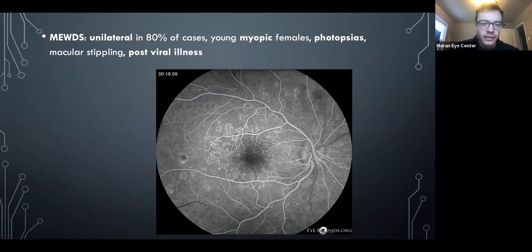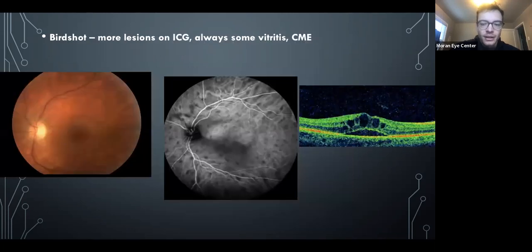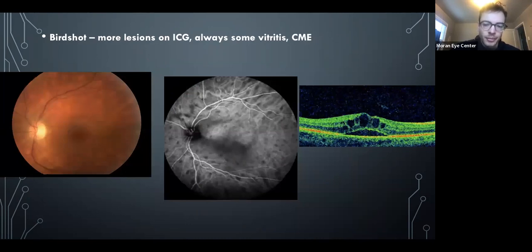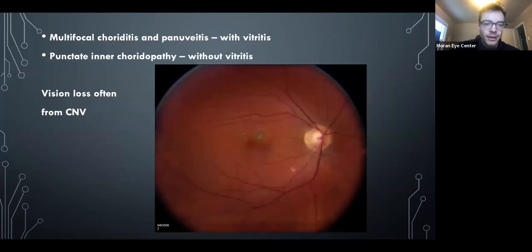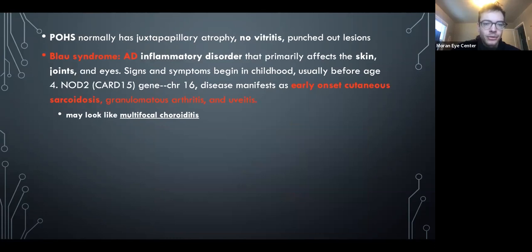White dot syndromes: AMPPE classically shows early blockage and late staining on FA, affects young women, and has a good prognosis. MEWDS looks similar but has a wreath-like appearance to fluorescein lesions, is more commonly unilateral, and patients complain of photopsias; it can follow a viral illness. Birdshot: vision loss is often from CME acutely and then ischemia/atrophy long-term; treat aggressively with immunosuppressive therapy. Multifocal choroiditis and PIC are essentially the same disease — one has vitritis, one doesn't — with vision loss due to secondary CNV. POHS has no vitritis.